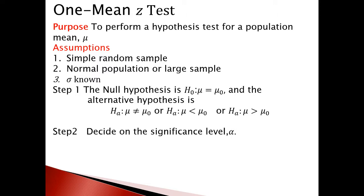Step two: we need to decide on the significance level, denoted alpha. For example, if we have a significance level of five percent, we say alpha equals 0.05.